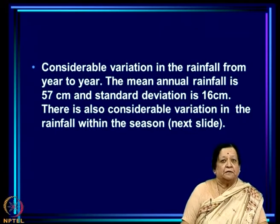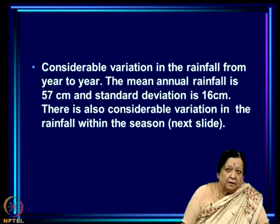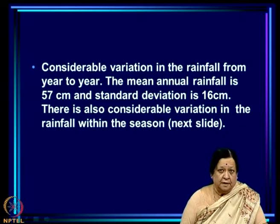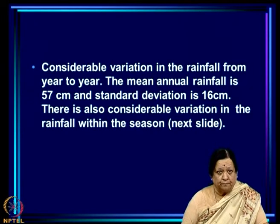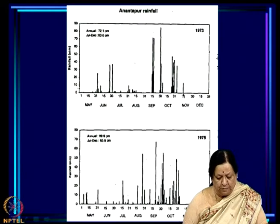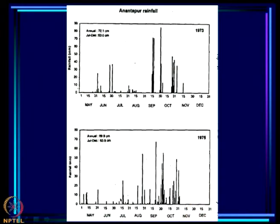There is considerable variation in rainfall from year to year in our study region. The mean annual rainfall at Anandpur is 57 centimeters and the standard deviation is as high as 16 centimeters. There is also considerable variation within the season. For example, in 1973 most of the rain fell from mid-September to mid-November, with hardly any rain in July-August. In 1975 there was plenty of rain in August and continuing into September-October.